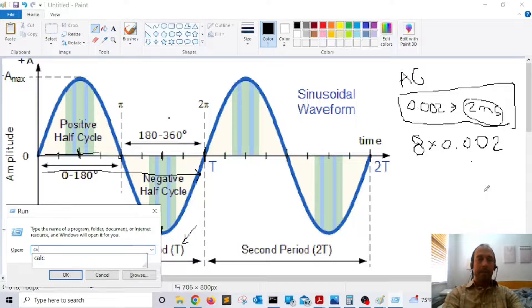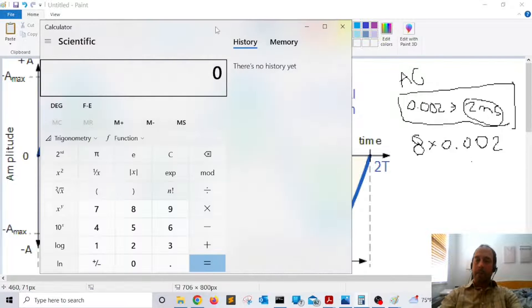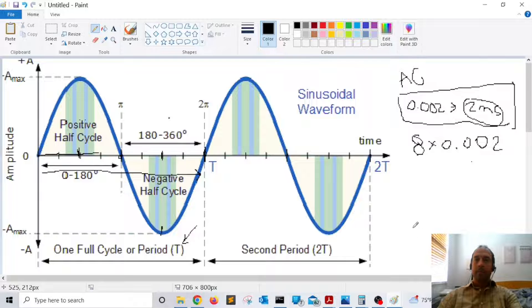And let's see how much is that. I'm going to say eight times 0.002 and that is T which is the period, it's 0.016 seconds. All right, so that is the period of the wave.